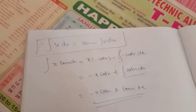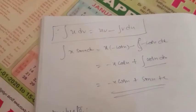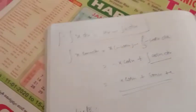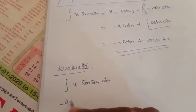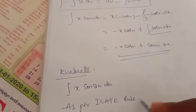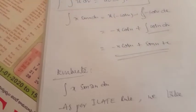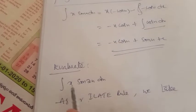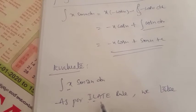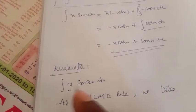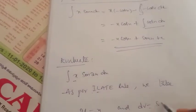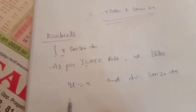Next problem: evaluate integral x into sin 2x dx. As per the ILATE rule, we do not have an inverse trigonometric function or logarithmic function in this problem. We have an algebraic function, so we take u equal to x, and the remaining value dv equals sin 2x into dx.